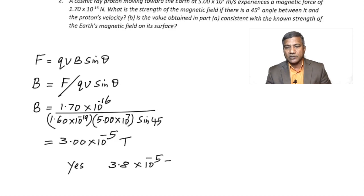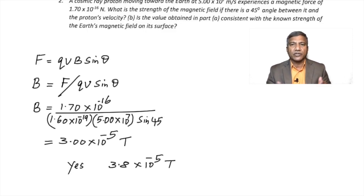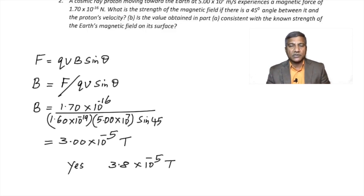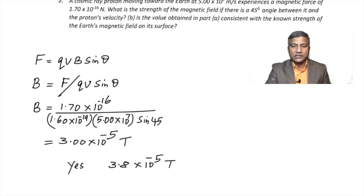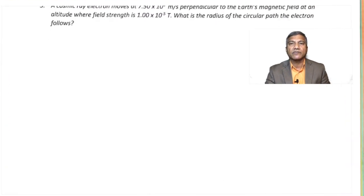The second part asks: is this consistent with the known strength of the Earth's magnetic field? Yes, it is, because the strength of the Earth's magnetic field at its surface is about 3.8 × 10⁻⁵ Tesla. Since these numbers are quite close to each other, it is consistent with the Earth's magnetic field.